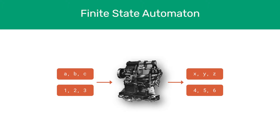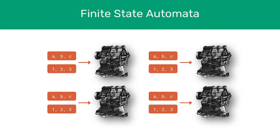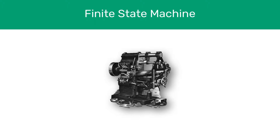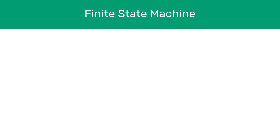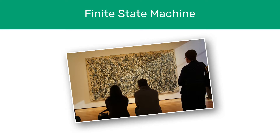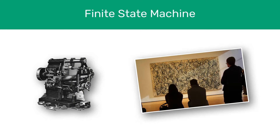Finite state machines don't actually need to have an output. You'll only see ones that do at A level. You might also see the term finite state automaton to describe a finite state machine that has no output. Finite state automata is the plural version. Now despite using a picture of an old-fashioned mechanical machine when referring to a finite state machine, we often don't mean a literal physical system, but instead an abstract creation we use to model simple computation and decision making. In this video we'll look at one physical example and one that's completely abstract, just so you're familiar with both.